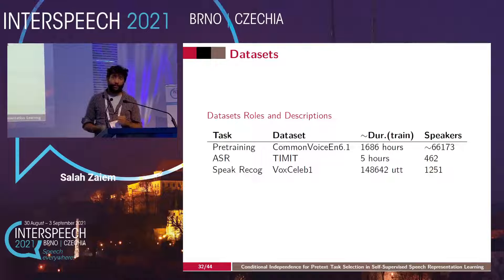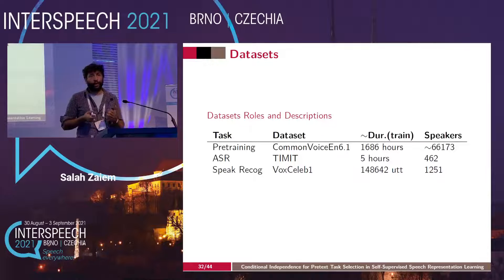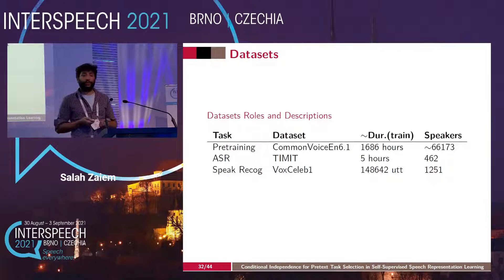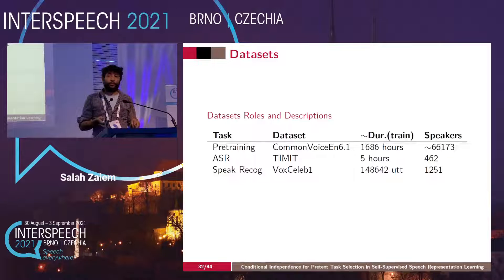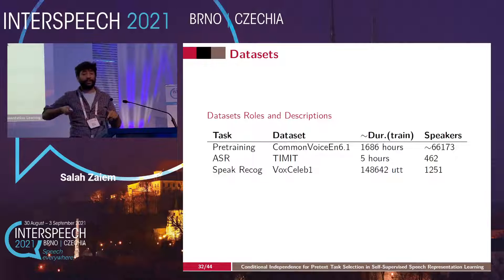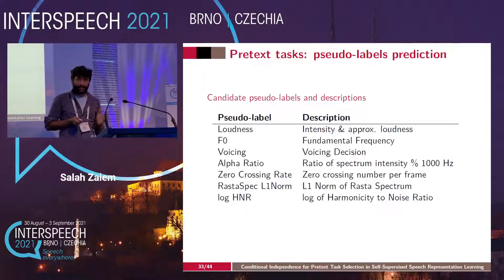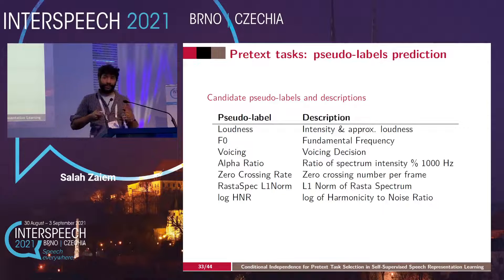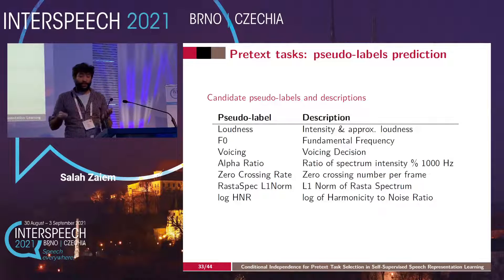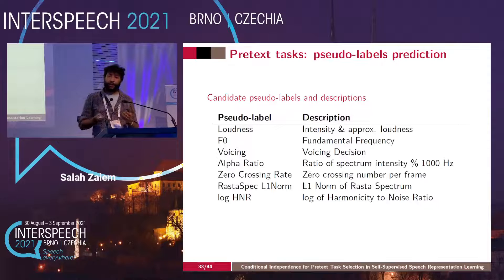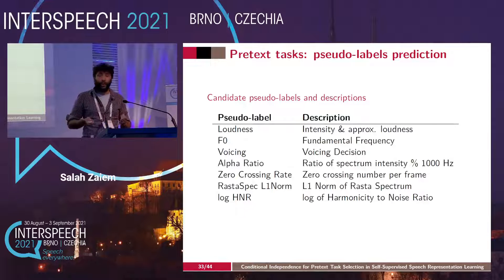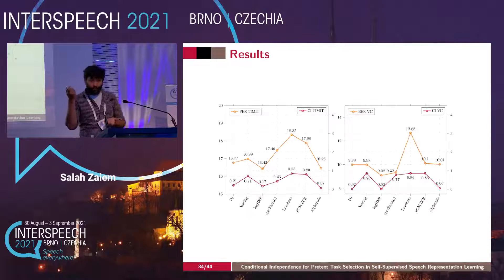For datasets, we use Common Voice for pre-training — one of the closest to natural settings given the number of speakers and varying recording conditions. We test on two downstream tasks: ASR with TIMIT and speaker recognition with VoxCeleb1. The pretext tasks consist in predicting pseudo-labels that are signal-related features, mainly related to prosody, derived from the Pace model workers and from the feature selection literature for speaker recognition.